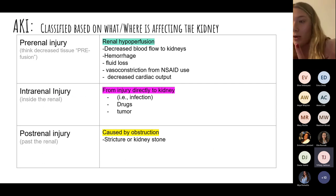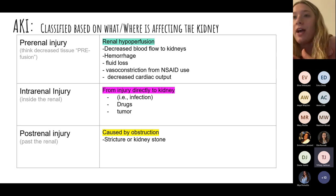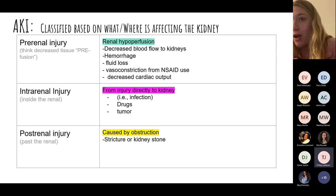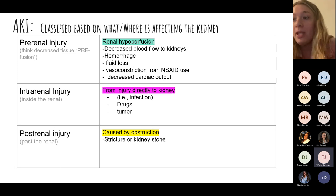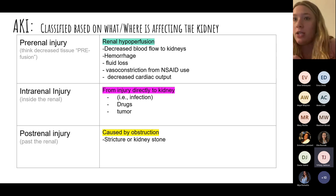Acute kidney injury (AKI) can lead to acute kidney failure. We classify it based on where the injury is affecting the kidney. A pre-renal AKI involves an issue with renal perfusion — blood, oxygen, and nutrients couldn't get to the kidney, so it won't function without proper oxygen and nutrients.